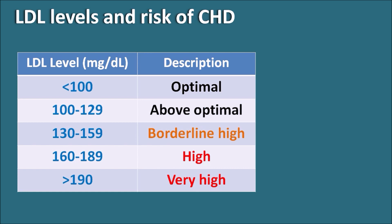These LDL classification thresholds differ by 30: less than 100 is optimal, 100 is above optimal, 130 is borderline high, 160 is high, and 190 is very high — easy to remember as they differ by 30.